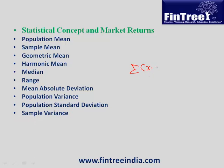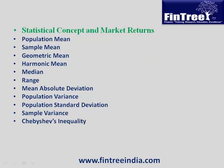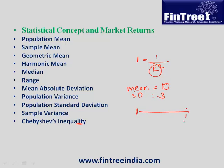Sample variance formula: sum of (x minus x-bar) squared divided by n−1, then take square root for standard deviation. Chebyshev's inequality works for any distribution and states that the proportion of data within k standard deviations of the mean is at least 1 minus 1 divided by k squared. For example, with mean 10 and standard deviation 3, within two standard deviations (range 4 to 16), at least 1 minus 1/4 = 75% of data lies.